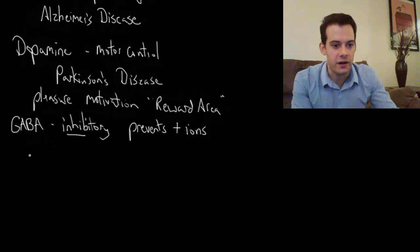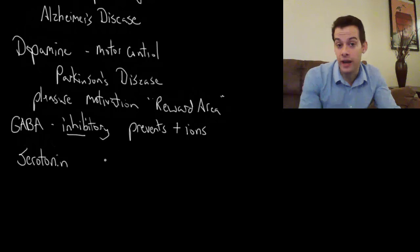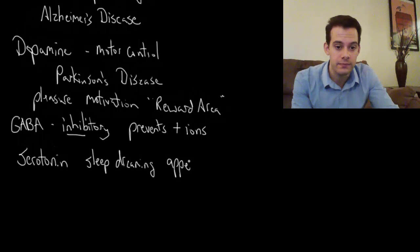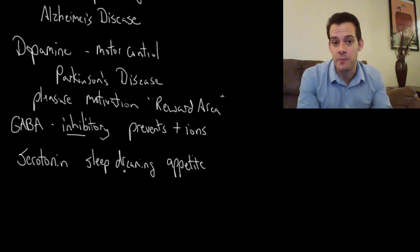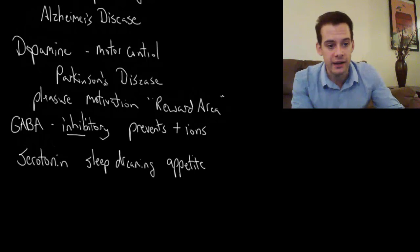The next neurotransmitter we'll talk about is one you may have heard of, and this is serotonin. Serotonin has a number of functions. It's involved in sleep and dreaming. It's also involved in appetite, and actually most of the serotonin in your body, about 90% of it, is found in your gastrointestinal tract. But it's also used in the brain.